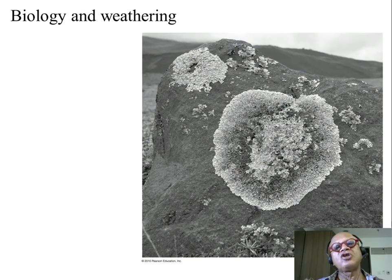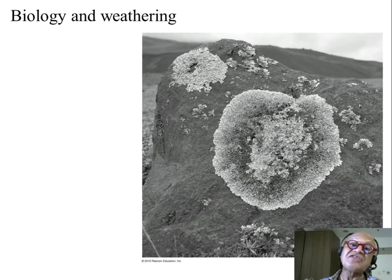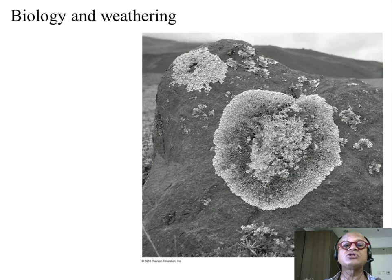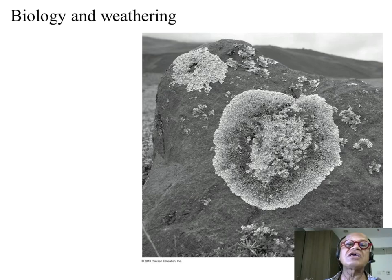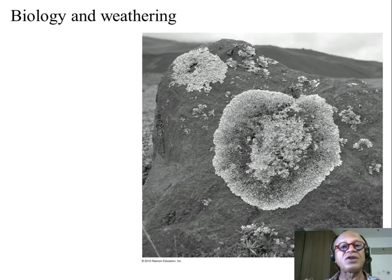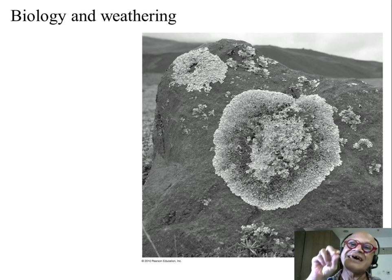When we talk about biology, it also plays another role in the carbon cycle. It's called biological or chemical weathering. Things like these moss-looking lichens grow on the ground and on rocks, setting tiny little roots. What are the roots doing?